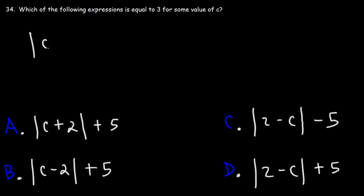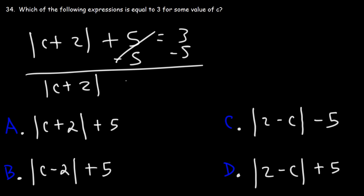If we set the absolute value of c plus 2 plus 5 equal to 3, if we subtract both sides by 5, let's see what's going to happen. We're going to get the absolute value of c plus 2, which is 3 minus 5, or negative 2.